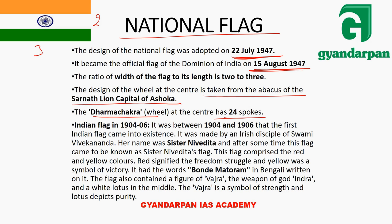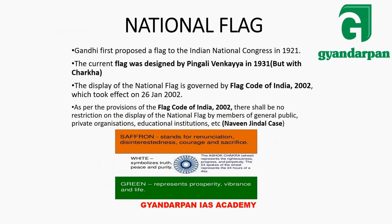The Indian flag's historical development: in 1904-1906, a flag came into existence. At that time Sister Nivedita, one of the favorite disciples of Swami Vivekananda, designed a flag. The colors at that time were red and yellow — red signified the freedom struggle and yellow was a symbol of victory. On it was written 'Vande Mataram' in Bengali. This was the National Flag.